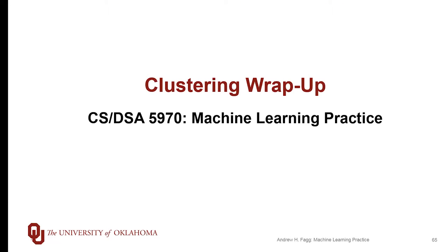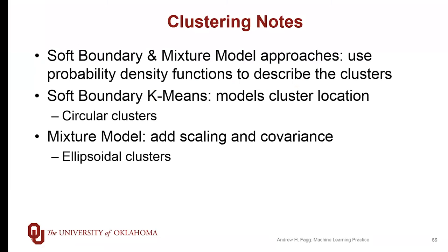We've been talking about unsupervised learning methods, and in particular, the last couple of days of videos have been focused on the problem of clustering. We've talked about k-means, which is your first go-to algorithm for clustering, and we've also talked about using Gaussian mixture models for clustering. For both the soft boundary k-means and the Gaussian mixture model approaches, fundamentally we have probability density functions that we're using to describe our clusters.